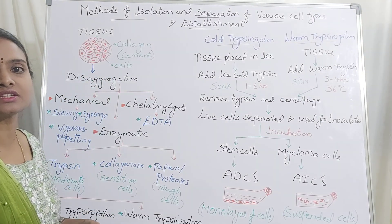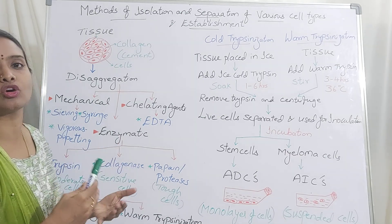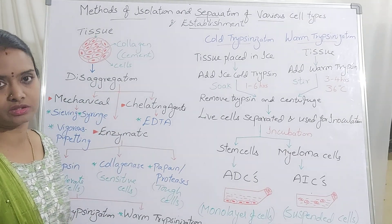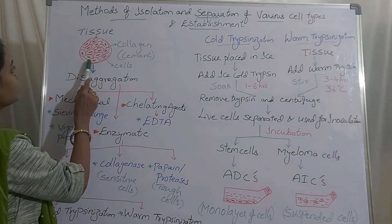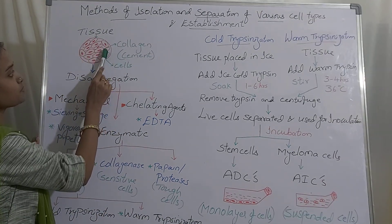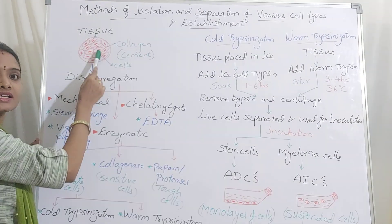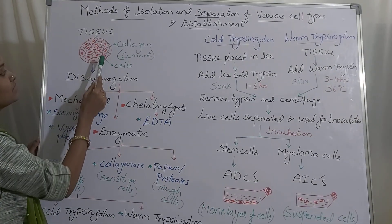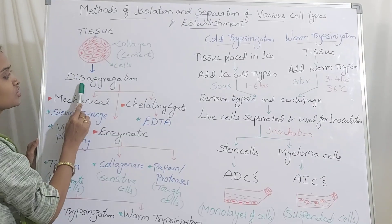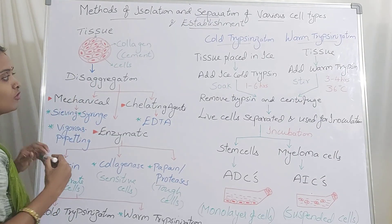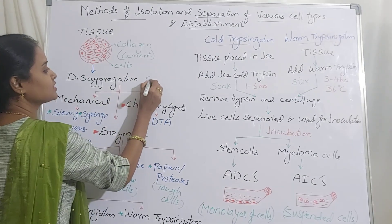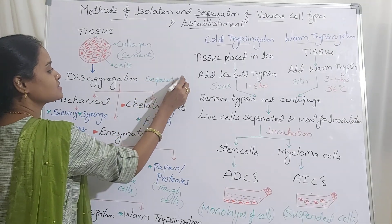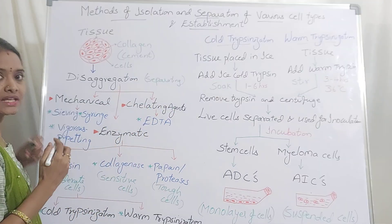Separation is nothing but the disaggregation process, in order to inoculate. Without disaggregation you can't inoculate. The collagen present between the cells has to be broken, and as a result you get isolated cells. Disaggregation is a process of separating all the cells to obtain a cell suspension, or to obtain a single isolated cell.